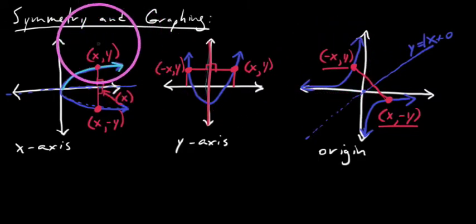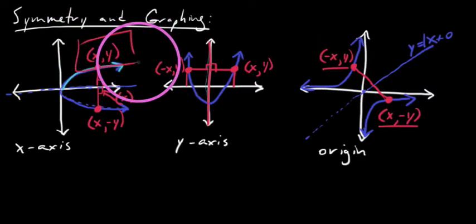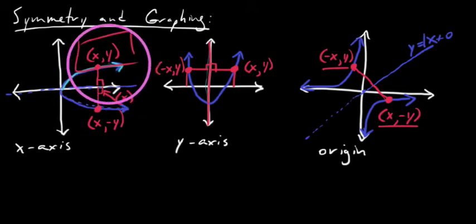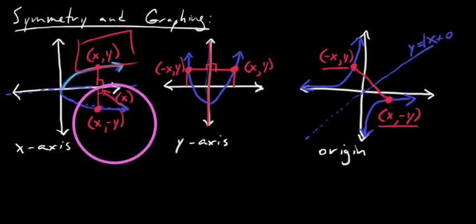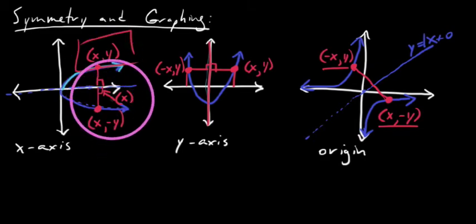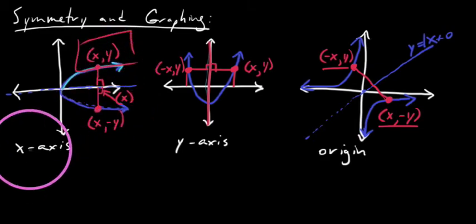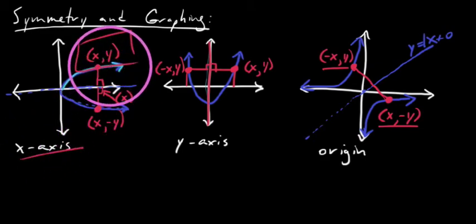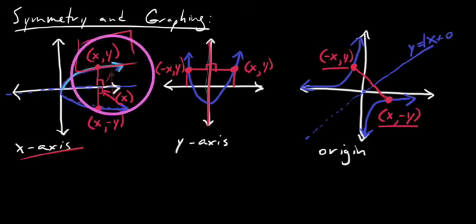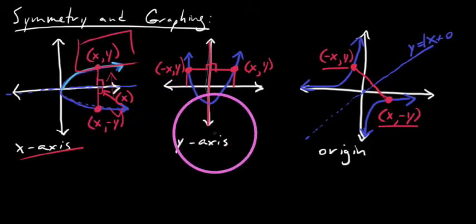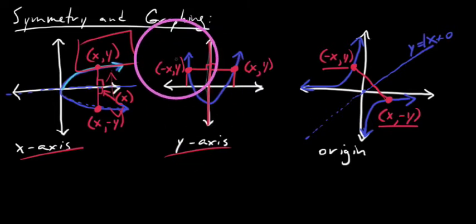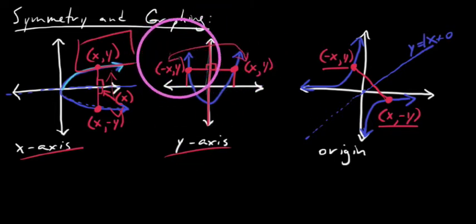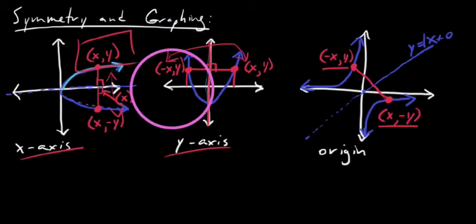With X-axis symmetry, you'll notice that both X with positive Y and X with negative Y are on the graph — the Y sign is flipped. For X-axis symmetry, both the positive Y and negative Y apply. With Y-axis symmetry, X changes its sign — the X-value kind of changes its value.